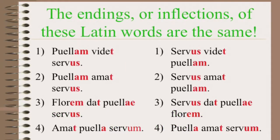Now let's take a look at the same Latin sentences rearranged. The four sentences on the left are the rearranged sentences, and the four sentences on the right are the original sentences. We can tell just by looking at the vocabulary that the sentences appear to be different, but Latin determines meaning by looking at inflections. That's what we mean by inflections determining the relationships between the words.